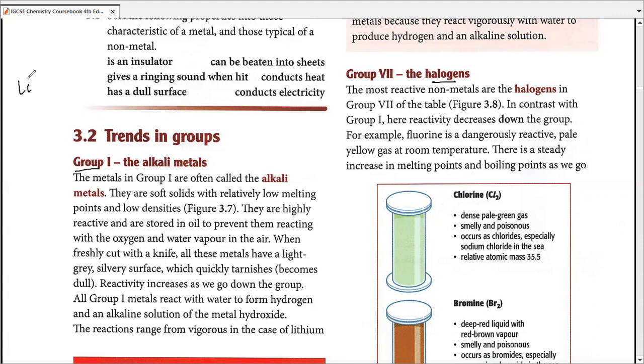For example, in group one, it started off with lithium, then sodium, potassium, rubidium, cesium, and cesium was the most reactive one. On the other hand, if we talk about halogens, they start off with fluorine, chlorine, bromine, iodine, and astatine.